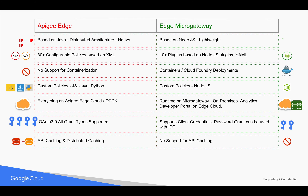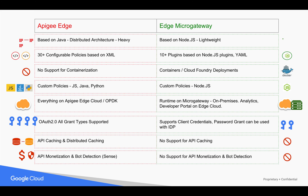Edge Micro Gateway doesn't support API caching. Apigee Edge has advanced functionality like API monetization where you can monetize and sell your APIs. Apigee Edge also supports an intelligent bot detection platform based on ML and AI, which helps detect and block threats based on API metadata. These capabilities are not available in Edge Micro Gateway.